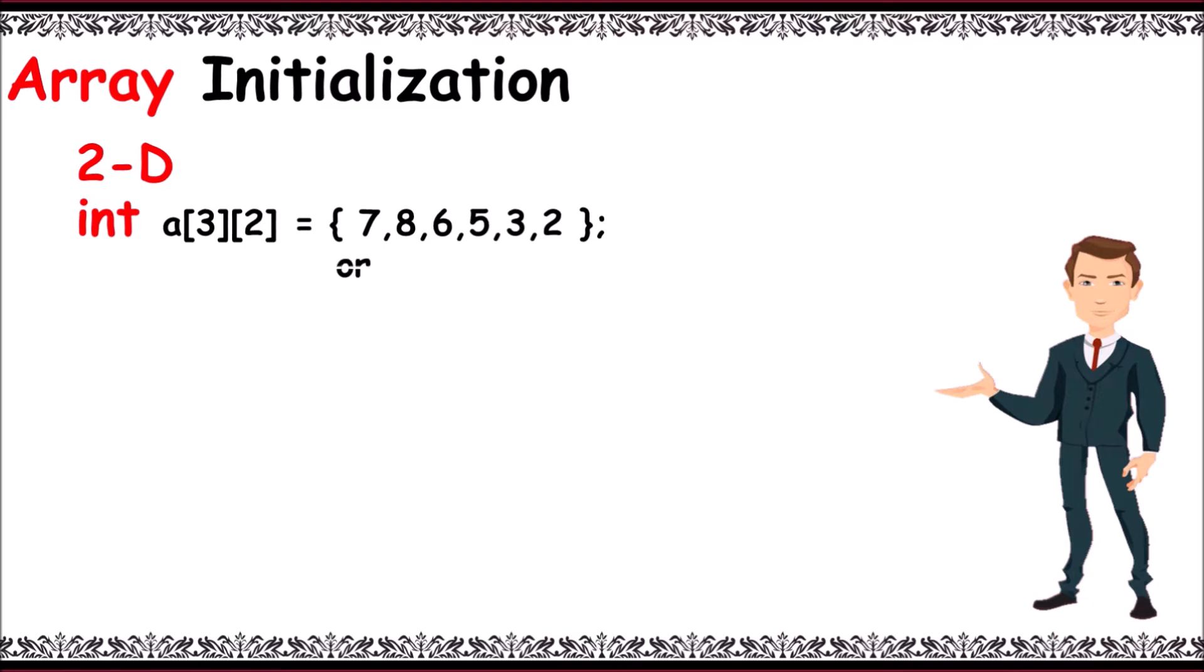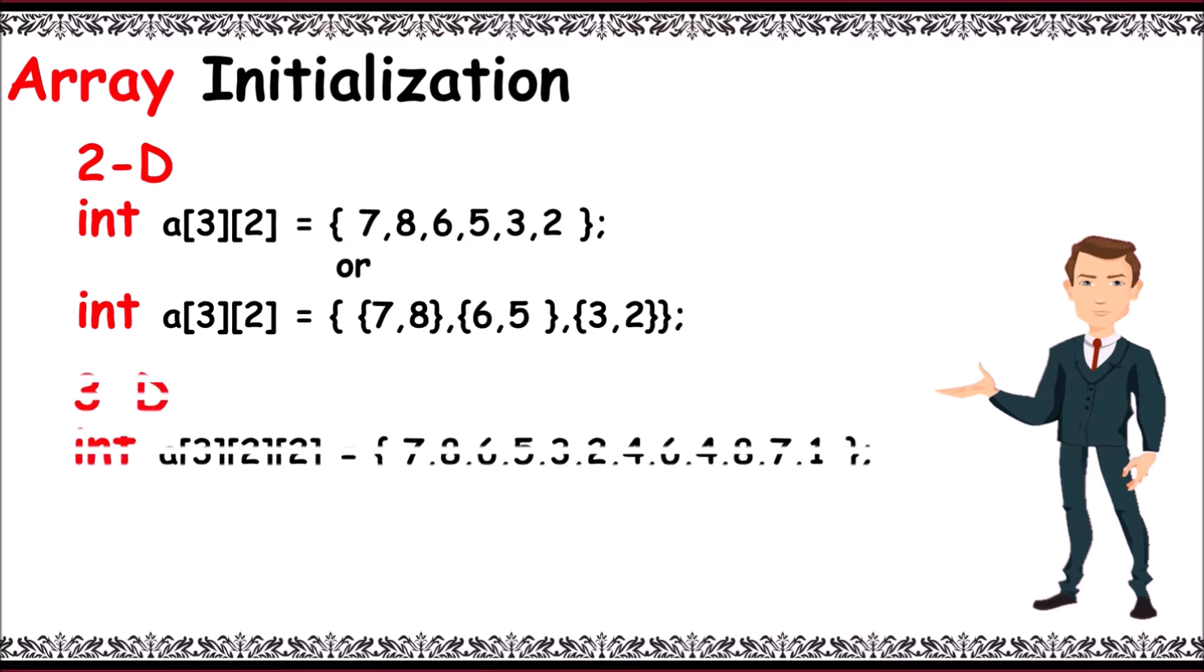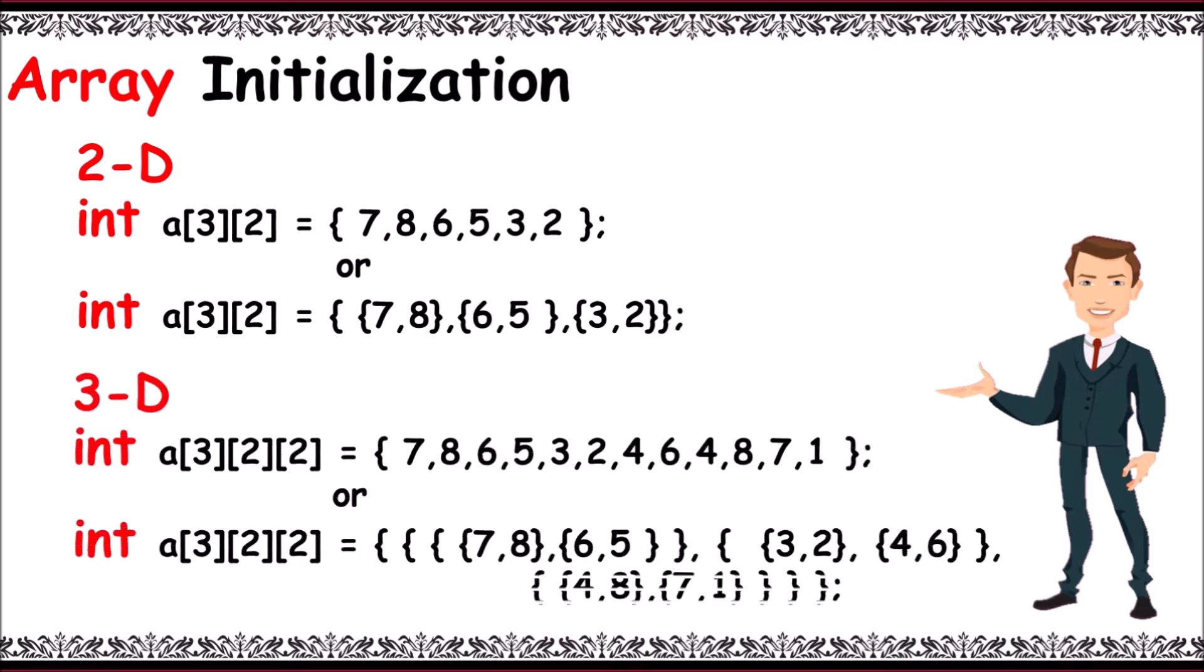And on the other hand, you can also write int a[3][2] in braces, rows can be mentioned individually like {7, 8}, {6, 5}, and {3, 2}. And similarly, the 3D array initialization will be done in the same way.